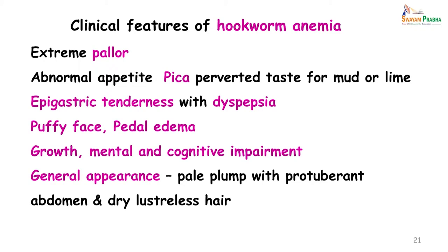The clinical features of hookworm anemia include extreme pallor, abnormal appetite with a perverted taste for mud or lime, and epigastric tenderness with dyspepsia. As blood loss continues, the patient develops a characteristic puffy face and pedal edema. In young children under 5 years, growth is stunted and mental and cognitive impairment occur — presenting as a pale, plump child with a protuberant abdomen and dry, lusterless hair.